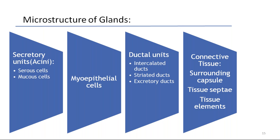You have to remember microstructure because why pleomorphic adenoma is called pleomorphic — all these are based on this. The broad microstructure of the glands are secretory units called acini, myoepithelial cells, ductal units, and connective tissue. Under secretory units, there will be either serous cells or mucous cells. Ductal units will have intercalated ducts, striated ducts, and excretory ducts, as well as interlobular and intralobular ducts. In connective tissue there will be surrounding capsule, tissue septa, and tissue elements.